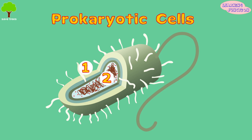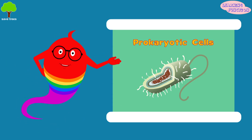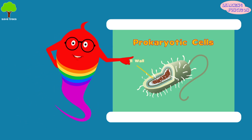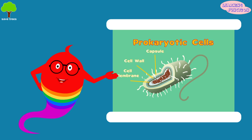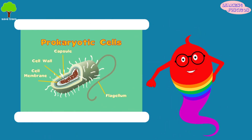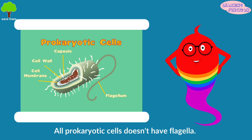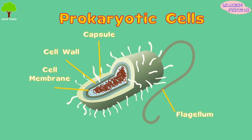There are three main regions of the prokaryotic cell. The outside protection, or envelope, of the cell — this is made up of the cell wall, capsule, and membrane. The flagella are whip-like appendages that can help the cell to move. Not all prokaryotic cells have flagella. The inside of the cell is called the cytoplasmic region, which includes the nucleoid, ribosomes, and cytoplasm.